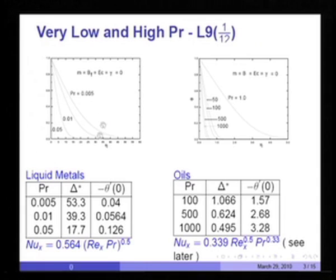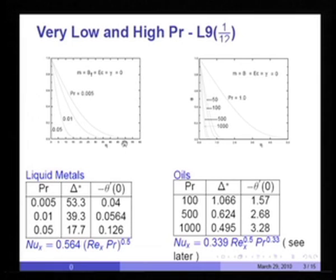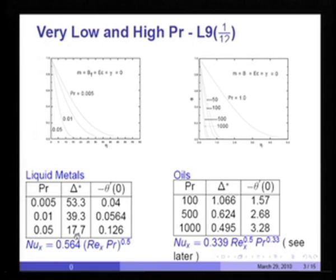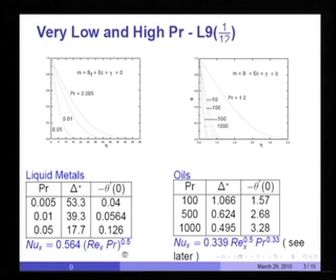For liquid metals, the value of eta at Prandtl number 0.005 — which is a very low Prandtl number — gives delta star nearly 53.3, whereas for Prandtl number equal to 1 it was 4.92. So as the Prandtl number is reduced, the thermal boundary layer thickness increases with a lower temperature gradient. The heat transfer can be correlated reasonably well as Nu_x equal to 0.564 Re_x^(1/2) Pr^(1/2).